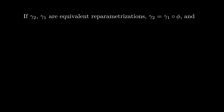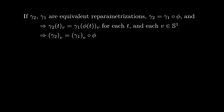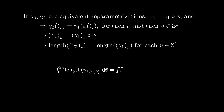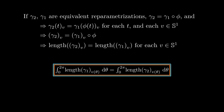The next property is about re-parameterizations. If gamma_1 and gamma_2 are re-parameterizations of each other, then when we project onto a direction v, the projection of gamma_1 is a re-parameterization of the projection of gamma_2. This means that the lengths of these projections are going to be the same. Integrating over all directions, we get that lambda does not depend on the parametrization.